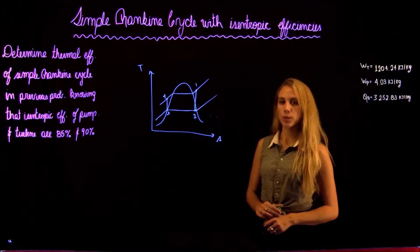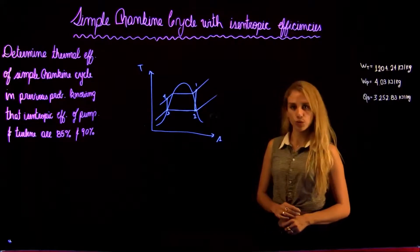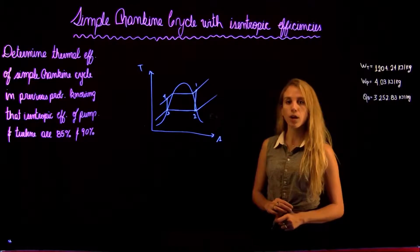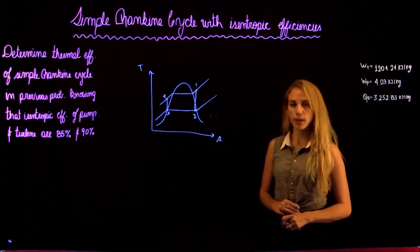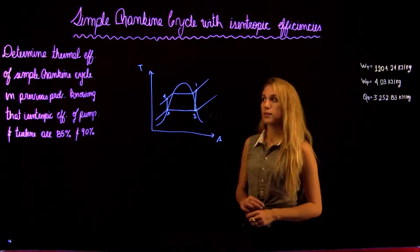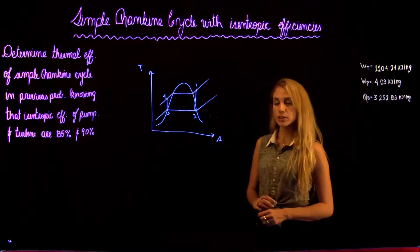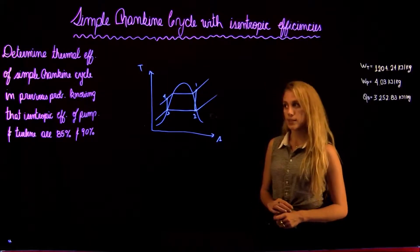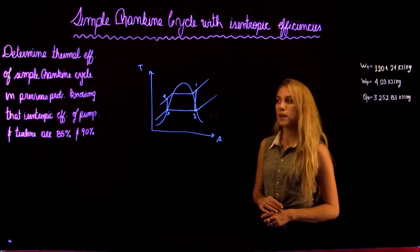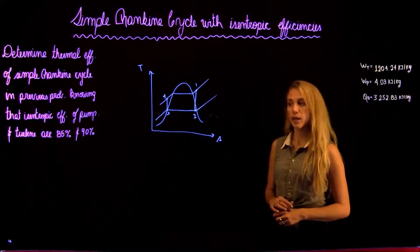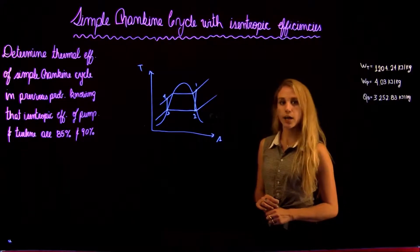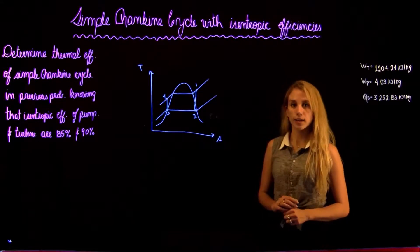Hello and welcome back to Thermodynamics 2 tutorials with Noria. We're going to be solving the second part of the sample Rankine Cycle. We are asked to determine the thermal efficiency of a sample Rankine Cycle from the previous problem, knowing that the isentropic efficiency of the pump and the turbine are 85 and 90%.